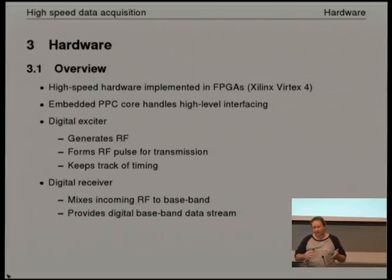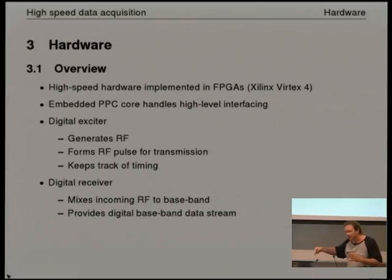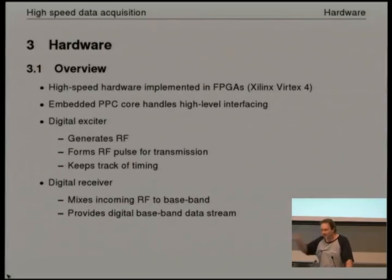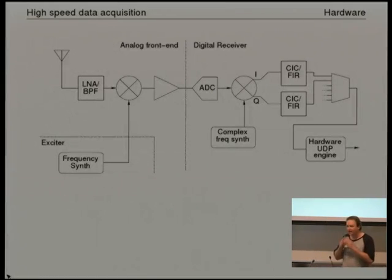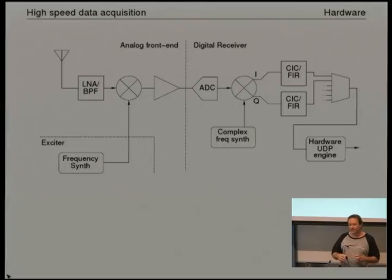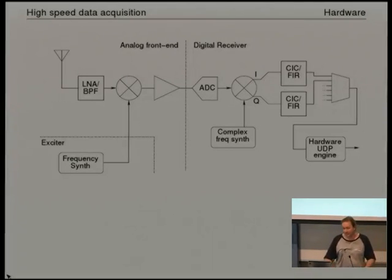The system actually has two components. There's what we call a digital exciter, which deals with all the transmission stuff — it forms the RF pulse, keeps track of all the timing in the system, and basically clocks the system along. The interesting part is the receiver, which takes the reflected RF back, converts that to baseband, and provides that baseband data stream as an output to the computer. On the left of the schematic we have the antenna, going into a low-noise amplifier and a bandpass filter, mixed to a frequency synthesizer to convert to IF, then directly sampled by an ADC. We have a mixer that splits it into the I and Q components, through some more filtering, and then a multiplexer which takes those two components plus similar components from other receiver channels and throws it out through a UDP engine implemented in hardware.